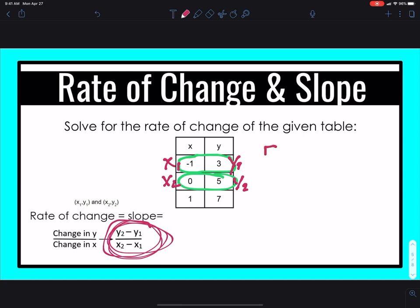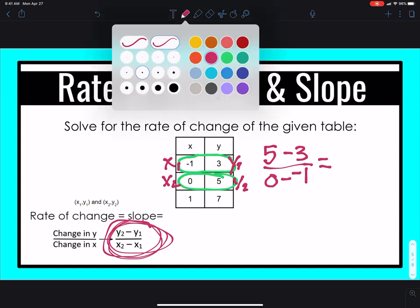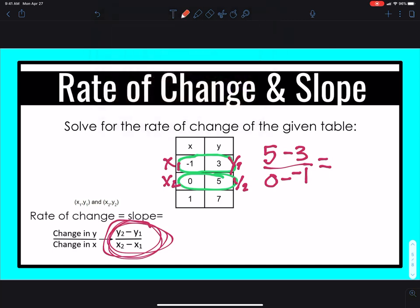So it's y2 minus y1. So 5 minus 3 over 0 minus a negative 1. Notice that it's negative, negative, or minus a negative. Now all we have to do is solve. So when we solve, we have 5 minus 3 is 2. All over, this minus a negative becomes a plus. So 0 plus 1 becomes a 1. We can simplify this and again we get 2.